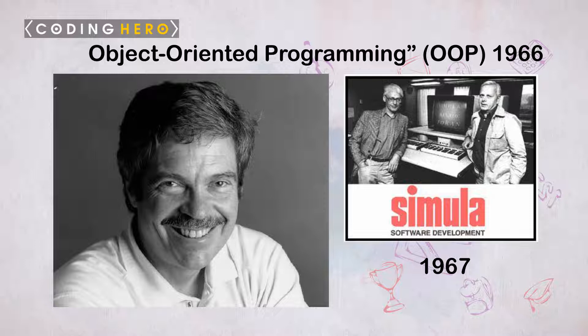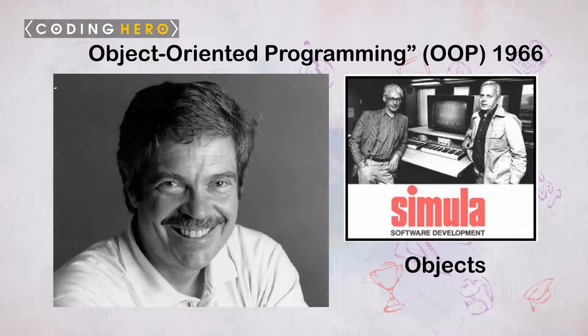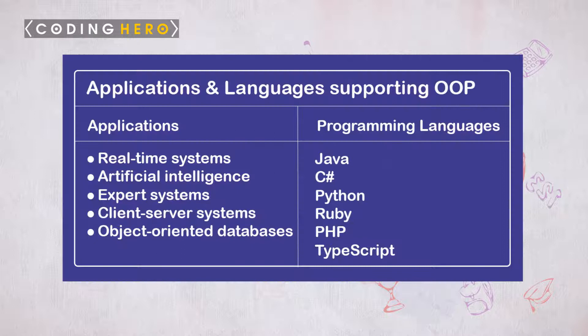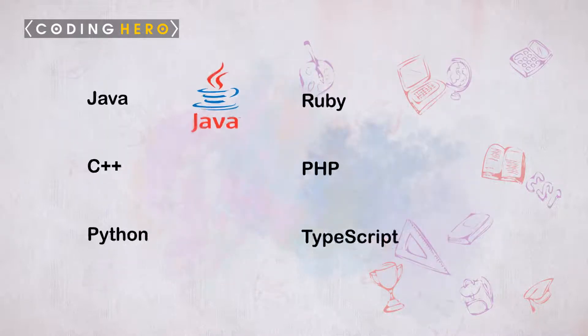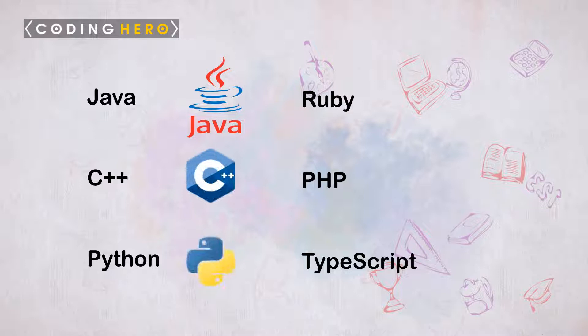The language called Simula was the first programming language with the features of object-oriented programming. It was developed in 1967 for making simulation programs, in which the most important information was called objects. Today, OOP is applied in almost every field such as real-time systems, artificial intelligence and expert systems, and client-server systems.